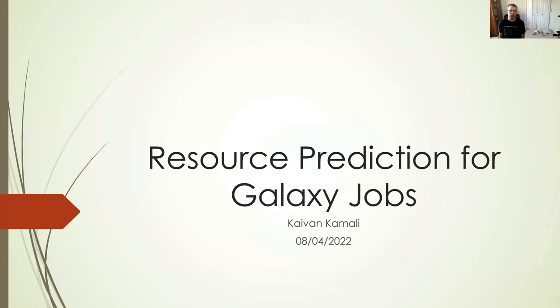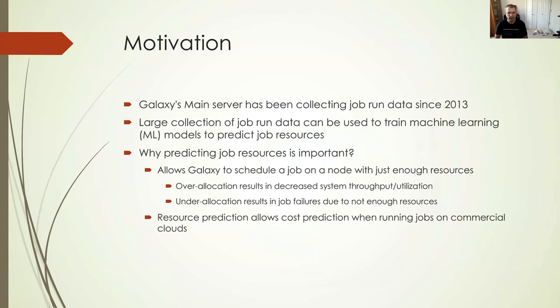The topic of this presentation is resource prediction for Galaxy jobs. The motivation is we have a lot of data. Galaxy's main server has been collecting job run data since 2013. I believe Europe and Australia have been doing that since a little bit after that. So a large collection of job run data can be used to train machine learning models to predict job resources. Why do we care? Why is predicting job resources important? Multiple reasons. It allows Galaxy to schedule a job on a node with just enough resources.